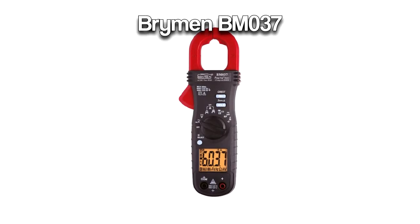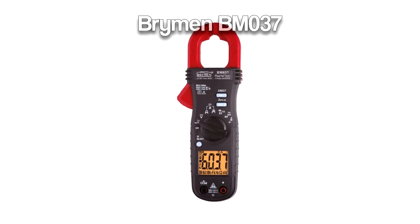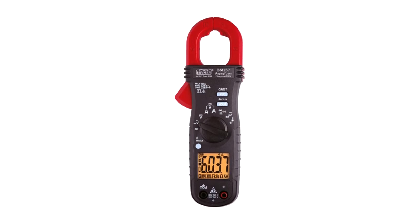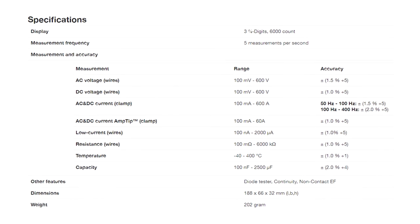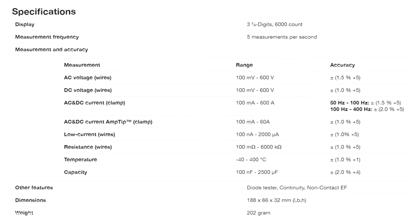Or take, for instance, this Brahman BM-037. This current clamp has a nice notch for holding cables, has quite big measurement ranges, and also has a lot of functionalities already for a pretty good price.